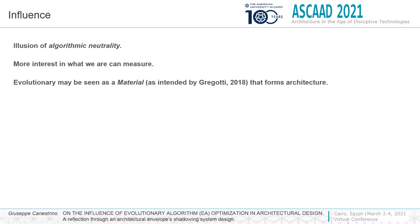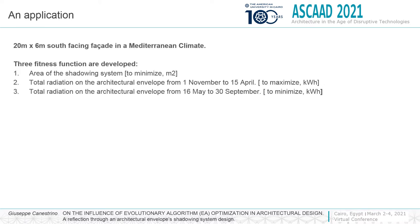From these aspects comes the need to look at EA as a material, as indebted to Vittorio Gregotti, that forms architecture, as well as physical material or the economical and social relations that lie behind an architectural design. The case study concerns the design and optimization of a facade shadowing system, an application proposed in a plateau of other research that, however, are more interested in technical results rather than in the implications in architectural design and discipline and profession.